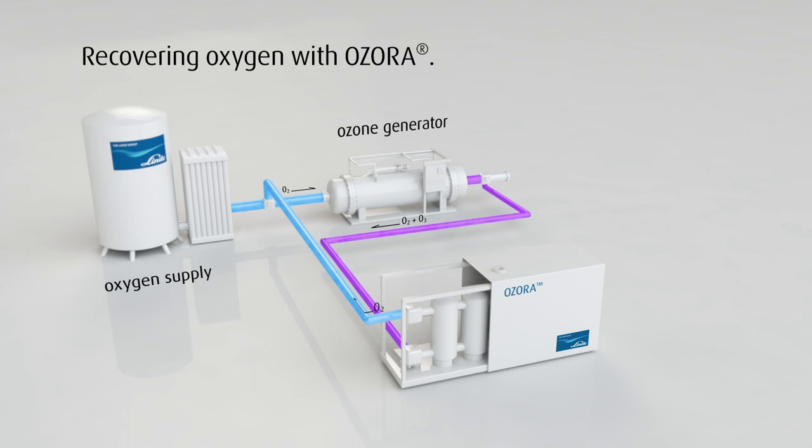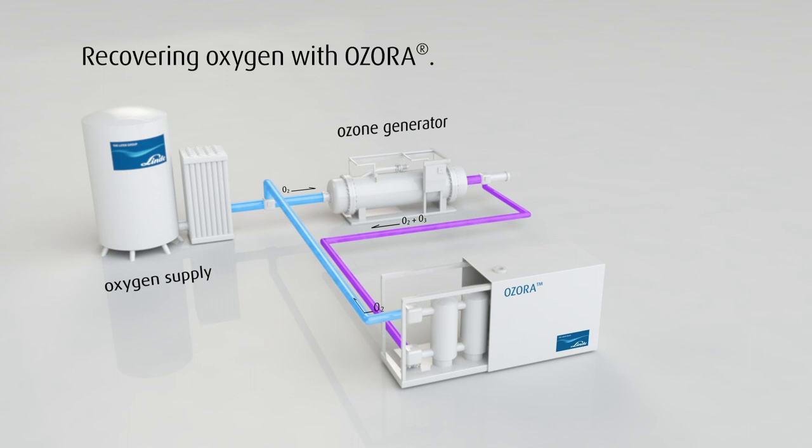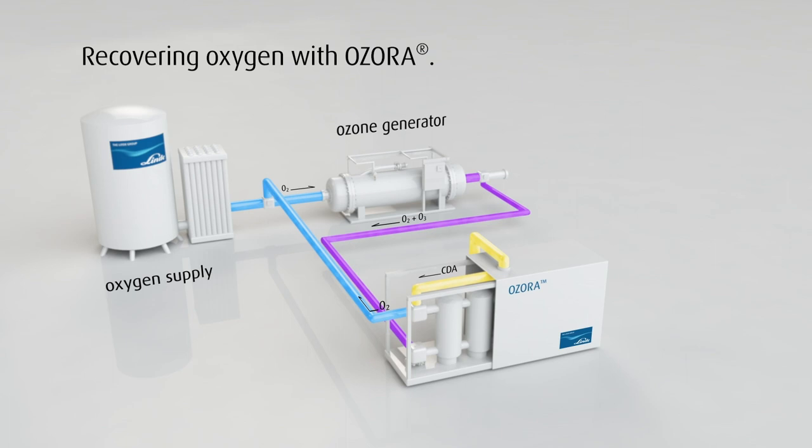The oxygen is fed back into the generator, while the ozone is mixed with dry air. This air-ozone mixture then exits the production process to its end purpose.